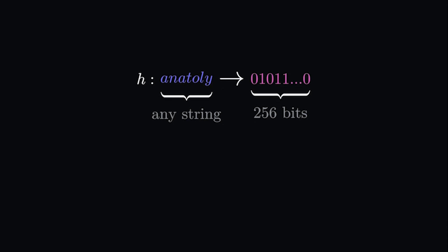Importantly, it is very hard to go backwards. These functions are one way. You can't guess that this hash came from Anatoly any faster than guessing every possible input. This is called preimage resistance.